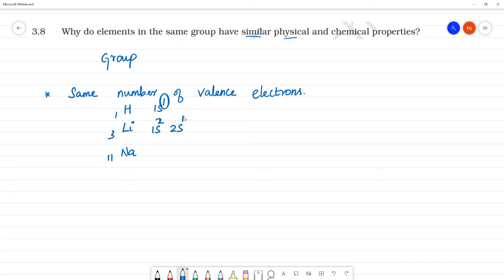The outer electronic configuration shows one valence electron for each. For sodium, we have 1s², 2s², 2p⁶, 3s¹.